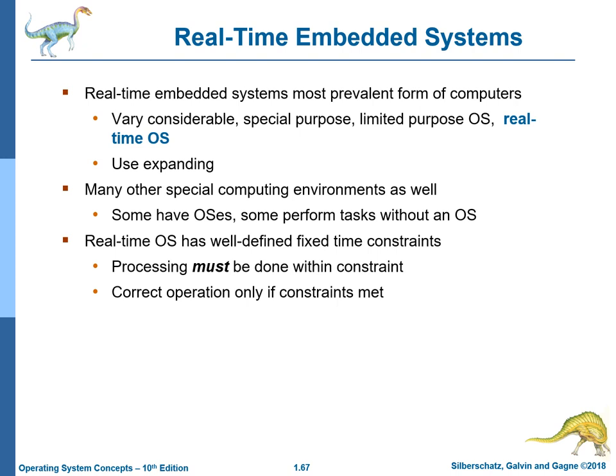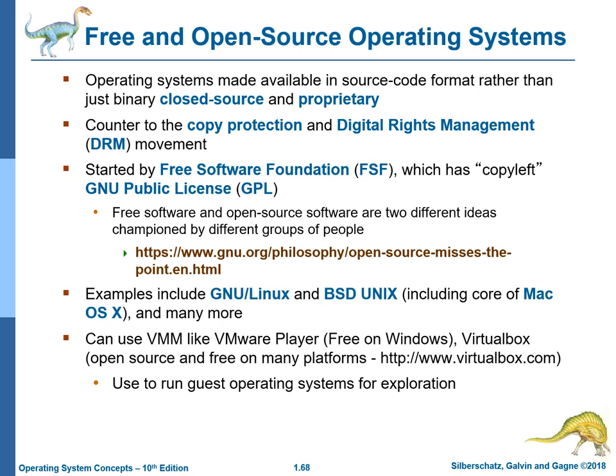Cloud computing environments are composed of traditional operating systems plus VMMs plus cloud management tools. Internet connectivity requires security like firewalls and load balancers to spread traffic across multiple applications. Real-time embedded systems are the most prevalent form of computers, with very considerable special-purpose and limited-purpose operating systems. Real-time OS use is expanding in many special computing environments. Some have operating systems; some perform tasks without one. A real-time OS has well-defined fixed time constraints — processing must be done within the constraint, and correct operation only occurs if constraints are met.